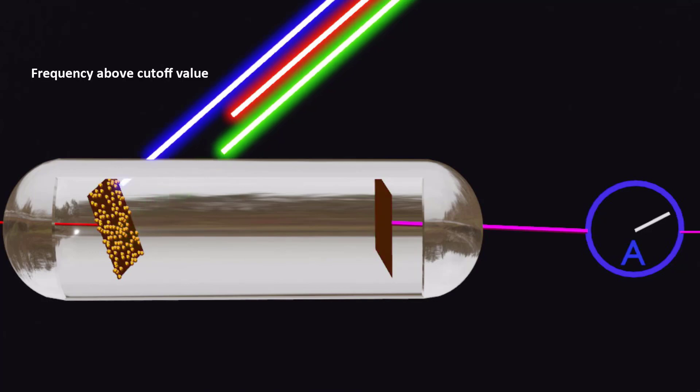Increasing the frequency of light increases the kinetic energy of the ejected electrons. Additionally, above the threshold frequency, increasing the intensity of light results in a higher number of ejected electrons, or a greater photoelectric current.